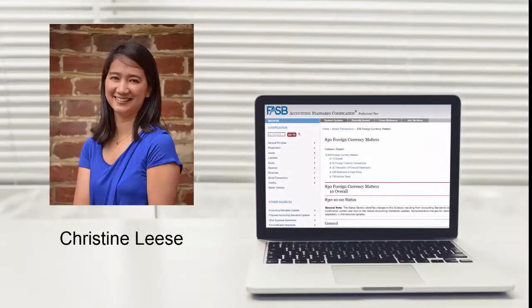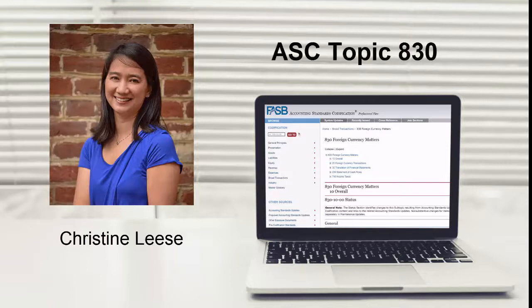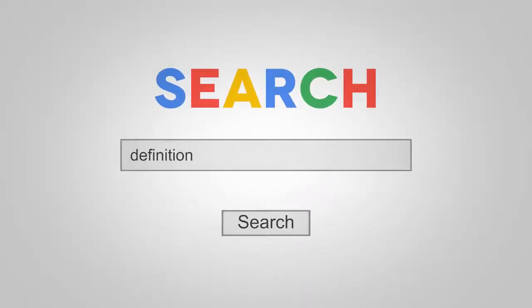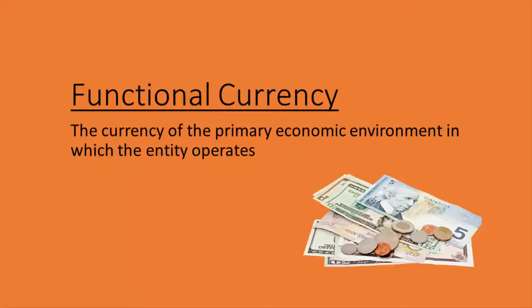It's Christine Lees with Gap Dynamics, and in this video, we'll review the accounting guidance regarding the determination of an entity's functional currency. Topic 830 defines functional currency as the currency of the primary economic environment in which the entity operates. It's normally the currency of the environment in which the entity primarily generates and expends cash.